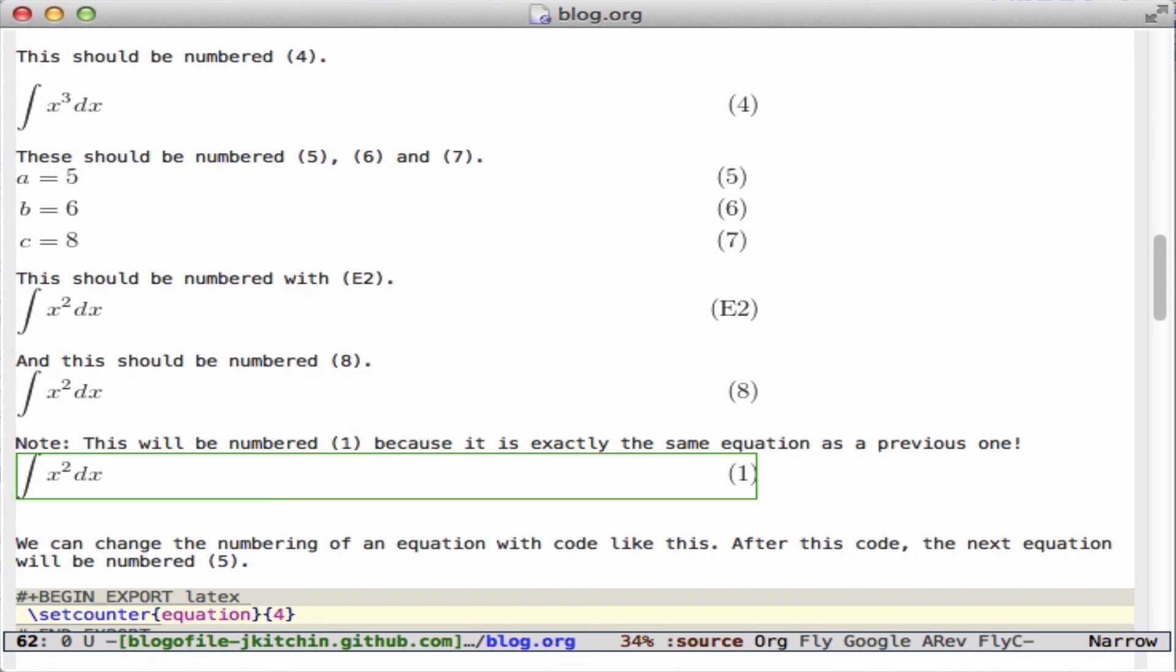Now a little point to remember is that org-mode caches the image so that it doesn't do unnecessary work. And since this equation is exactly the same as number 1, it has a counter of 9, but it actually overlays the first image on top of it. I don't know what we can do about that. Don't repeat your equations, and it won't be a problem.